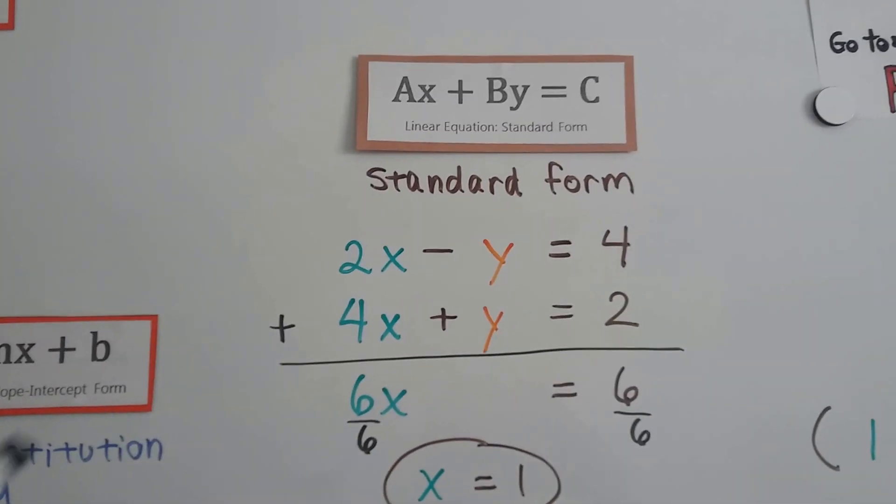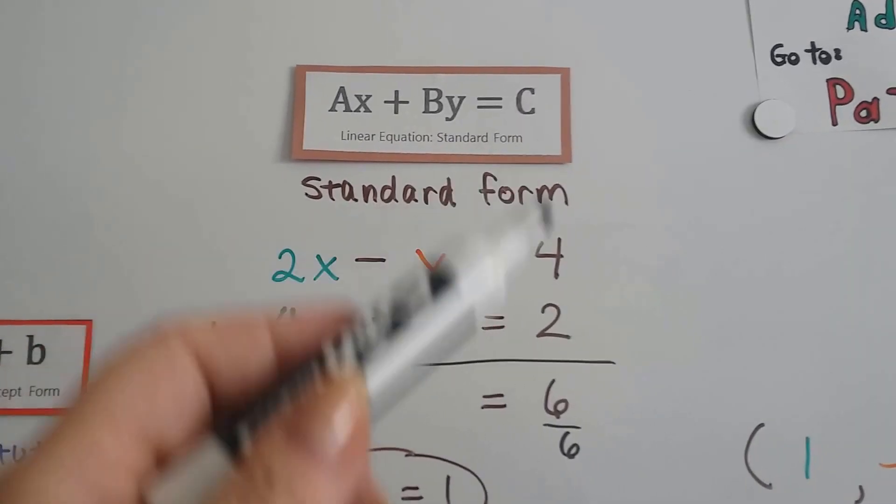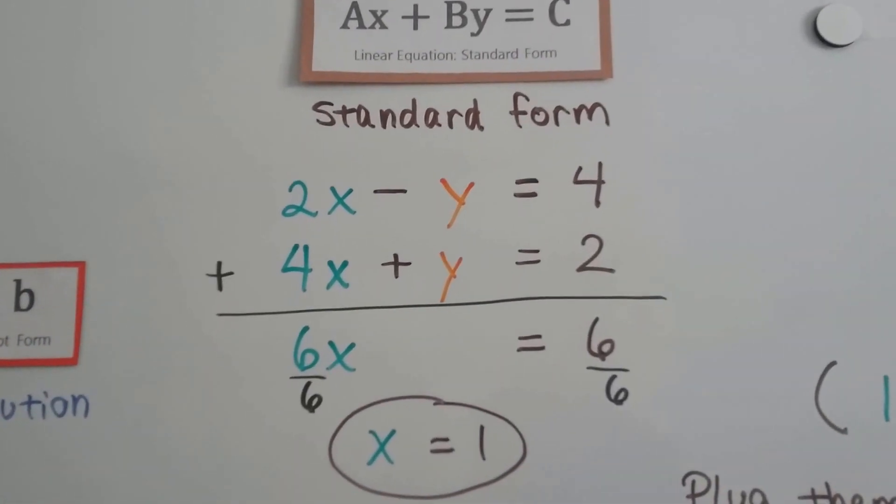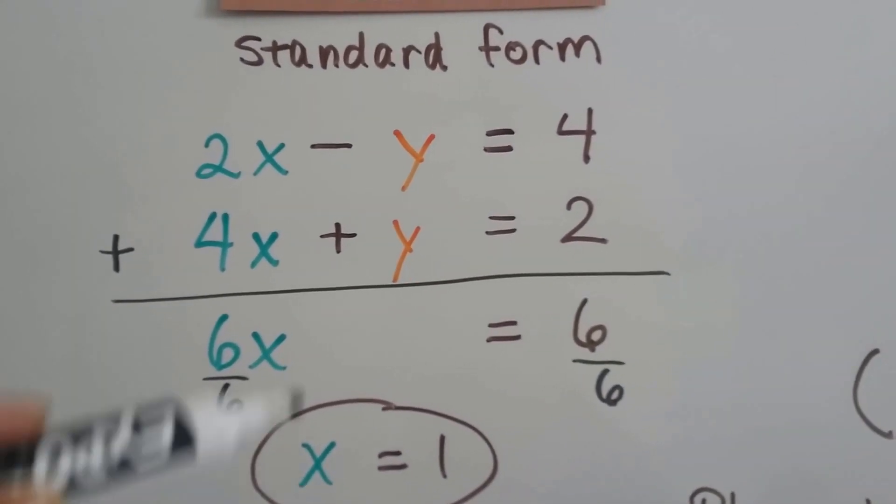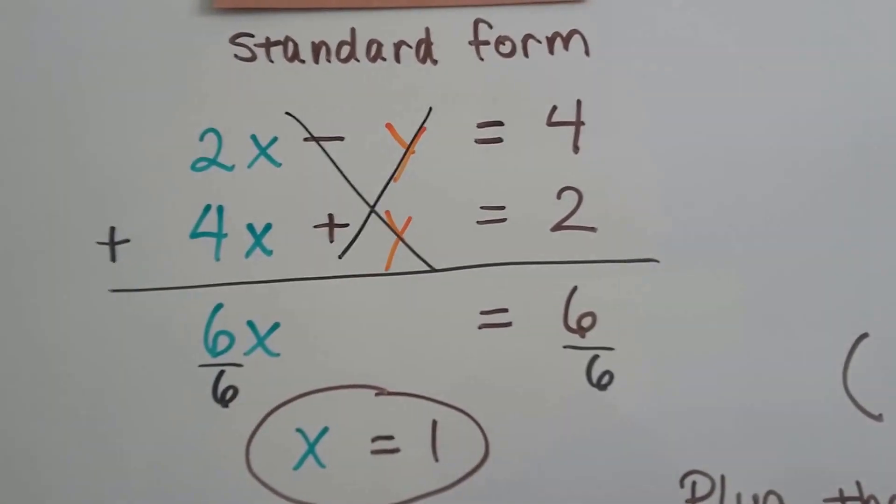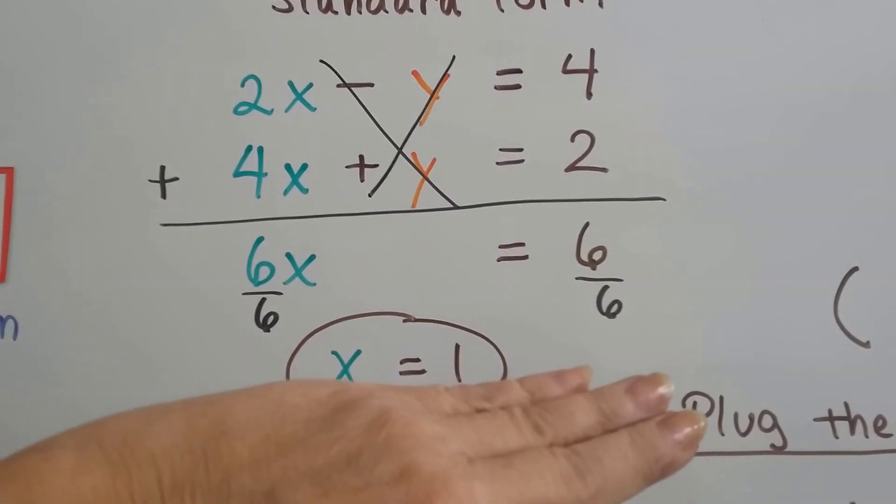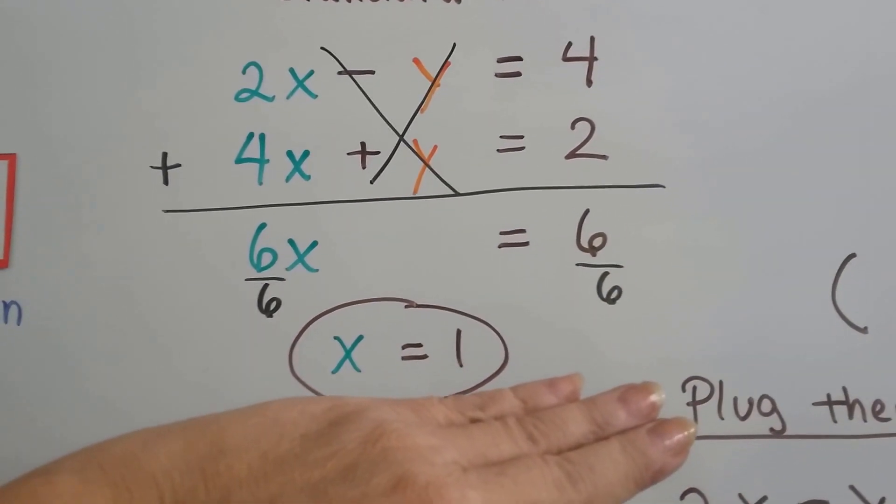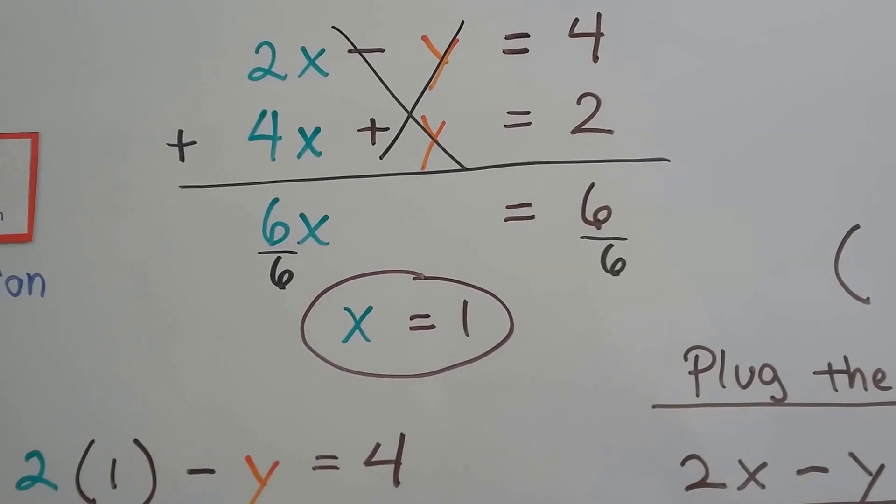A coefficient with x plus or minus a coefficient with y equals a constant. So we stack them, we add them. 2x and 4x makes 6x. This -y and this +y make a zero pair and it's eliminated, and 4 and 2 is 6. Now we've got 6x = 6. Well, then that means x = 1, doesn't it? We divide both sides by this coefficient 6. So now we know x is 1.